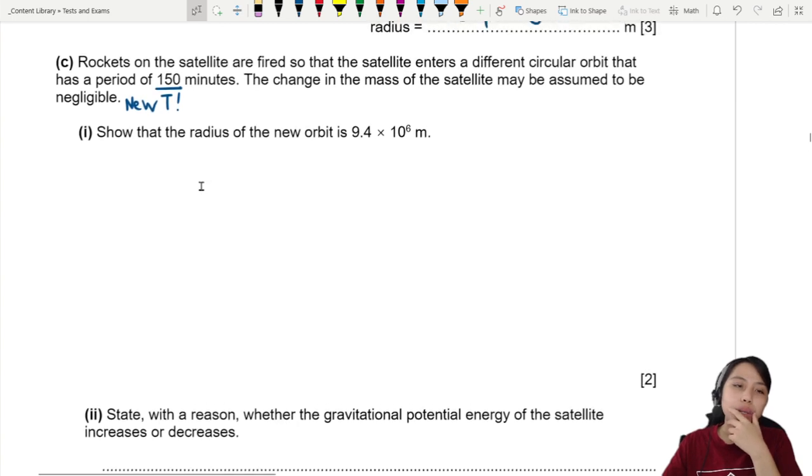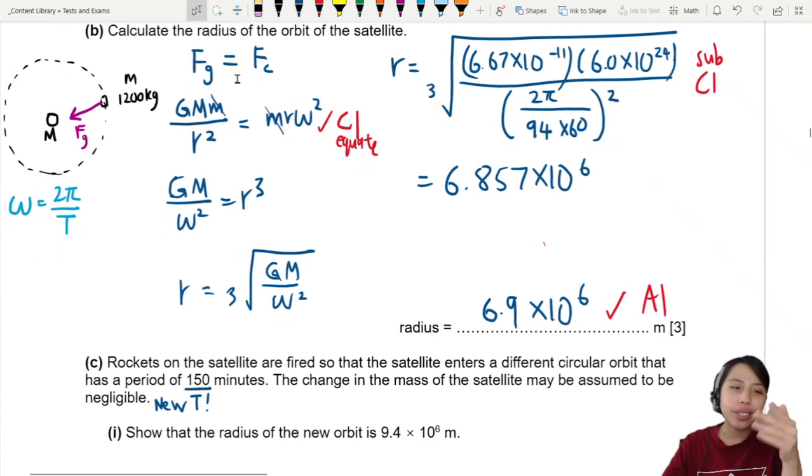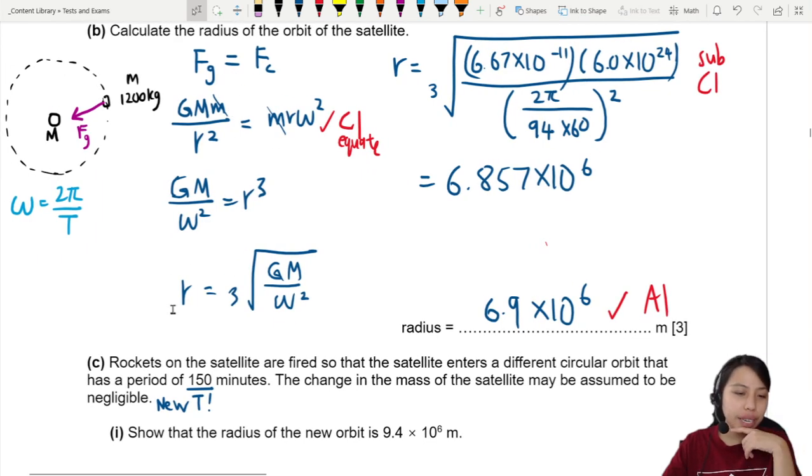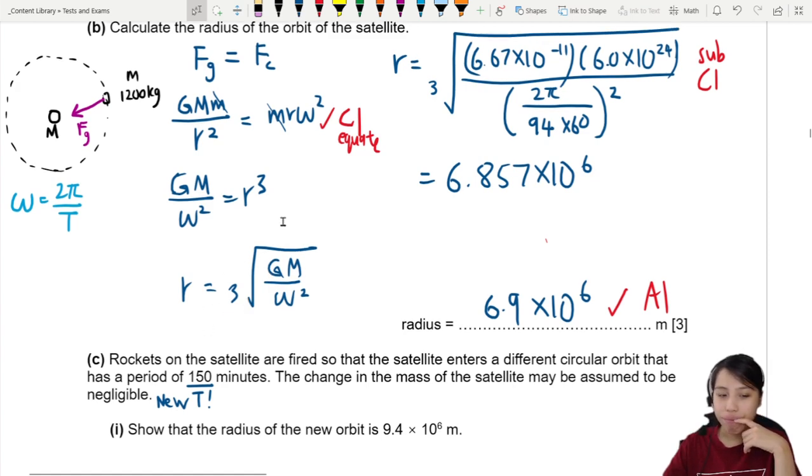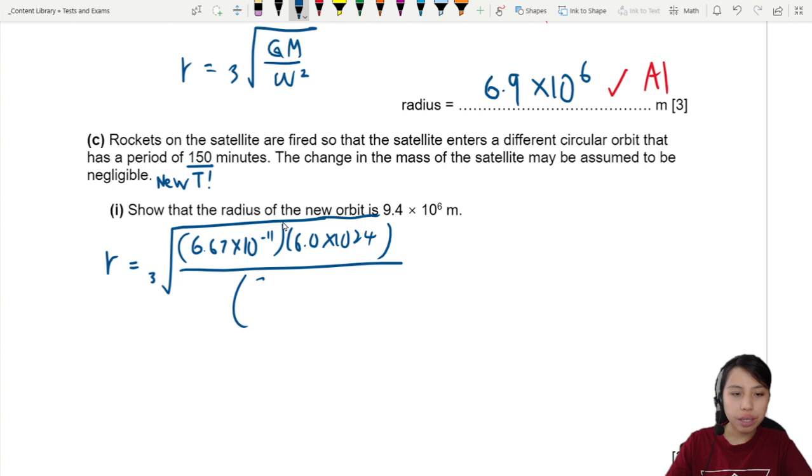The radius of the new orbit is 9.4. I don't want to rewrite the whole working here. FG equals FC, same thing. I'm just going to take this R, this radius, and just plug the values inside. So reusing the previous one: R equals cube root of 6.67, mass of the earth, and here is 2 pi over 150 minutes, then convert to seconds.